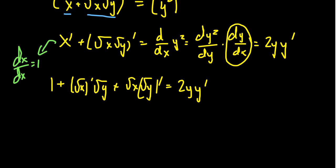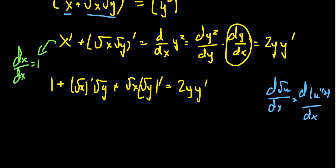Now we need to take the derivative of the square root of x. When taking the derivative of the square root of u with respect to x, think of it as u to the 1/2 power. By the power rule you get 1/2 · u to the negative 1/2 times the derivative of u with respect to x, which can be rewritten as u prime over two times the square root of u. That is the derivative of a square root function using the chain rule.